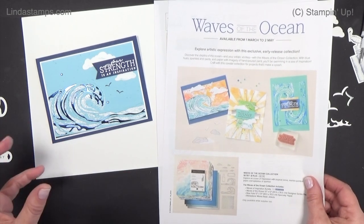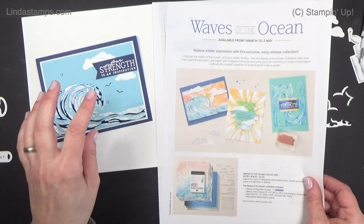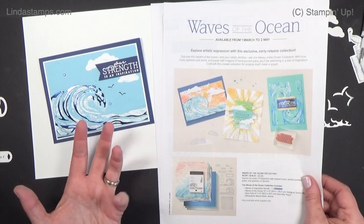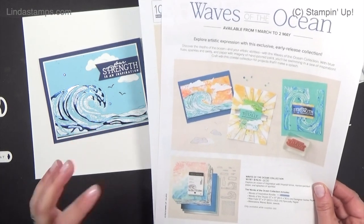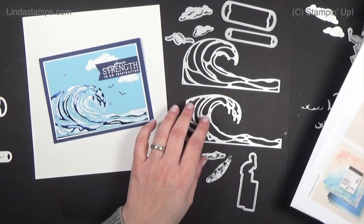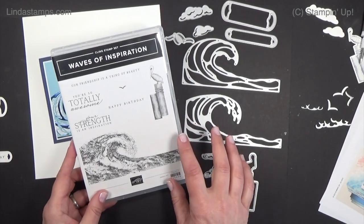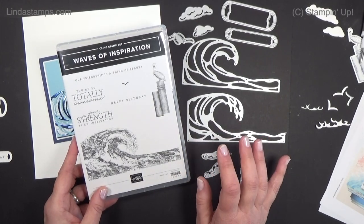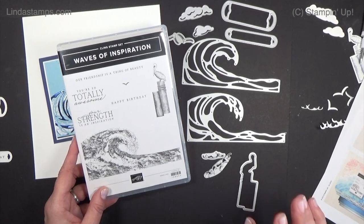I'm going to do a part one and part two. In part one I'm going to show you all the parts and pieces and we're going to do this card. Then part two next week I'll do some extra projects with it. This is a sneak peek of what will be in the annual catalog. The bundle with the dies and the stamps will be in the annual catalog that comes out in May.